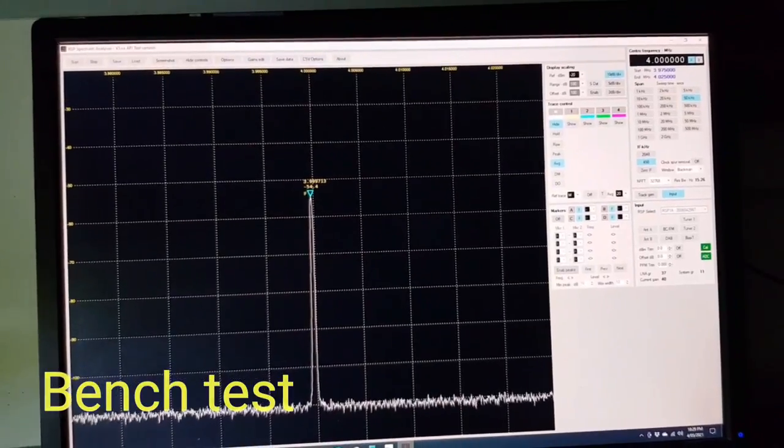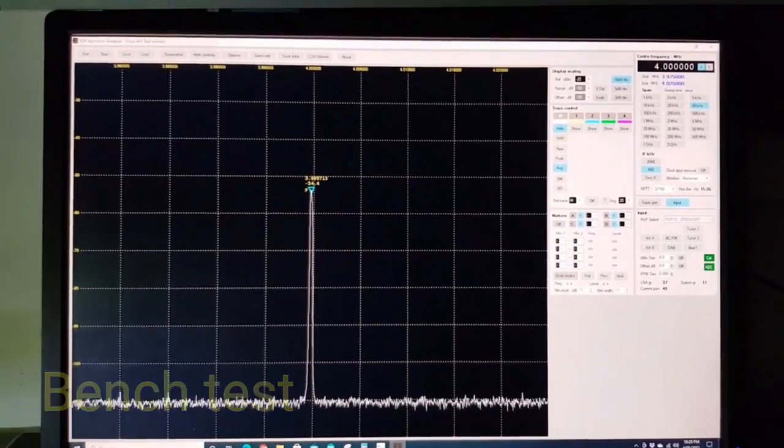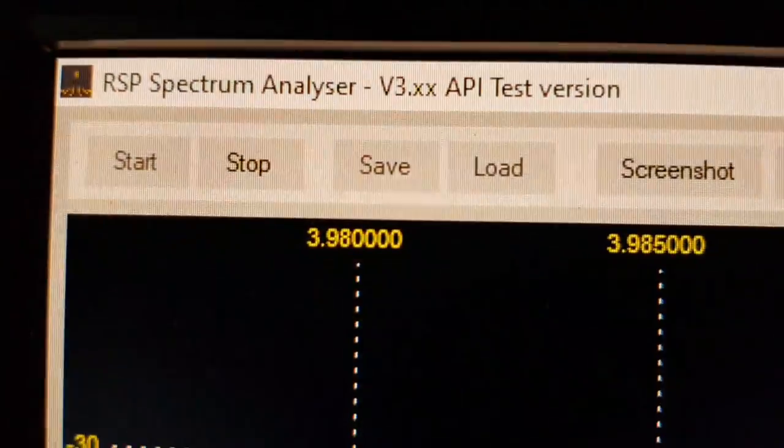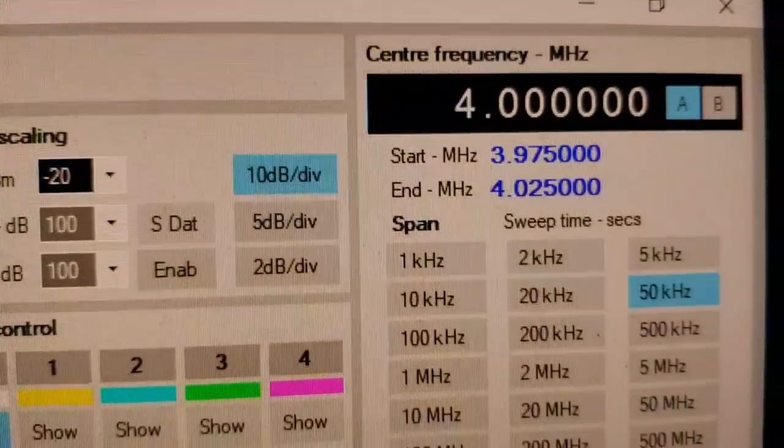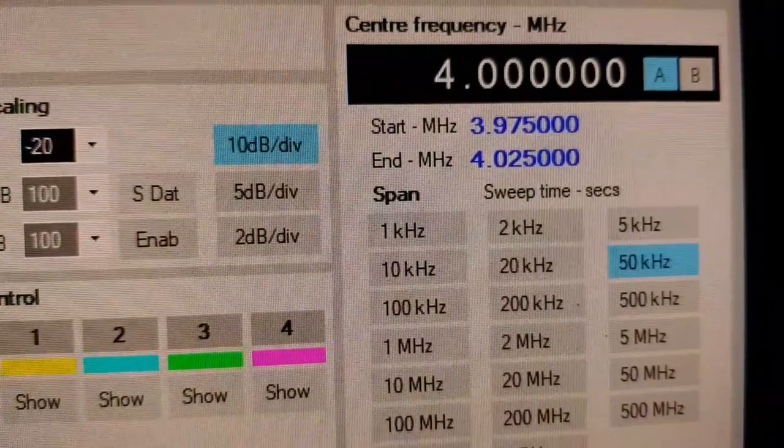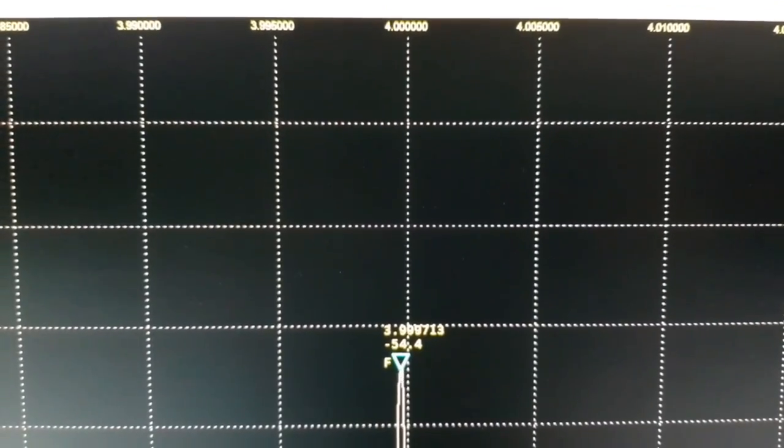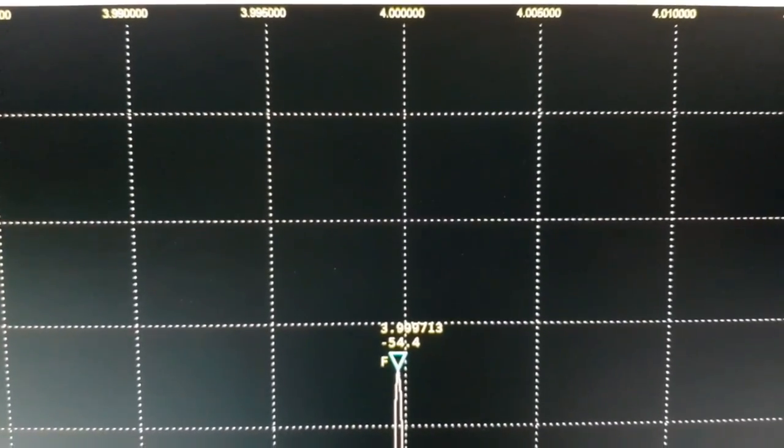This is the spectrum analyzer software that you can use with the SDR Play RSP1A. So I've got it centered on 4 MHz, 10 dB per vertical division, and 5 kHz per horizontal division.